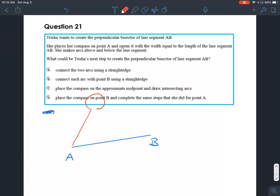And then she opens it to the width so the line segment is on B. So that means that this is the pencil part. And then she makes an arc. So this arc that she makes, she makes arcs above and below her line segment.